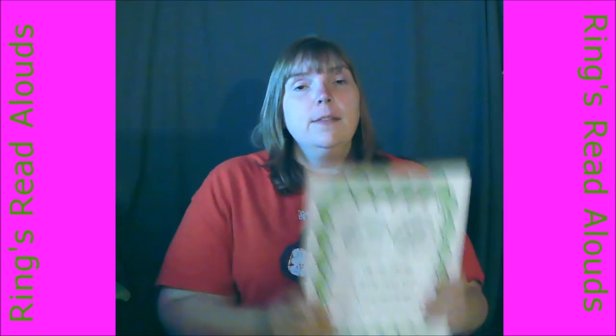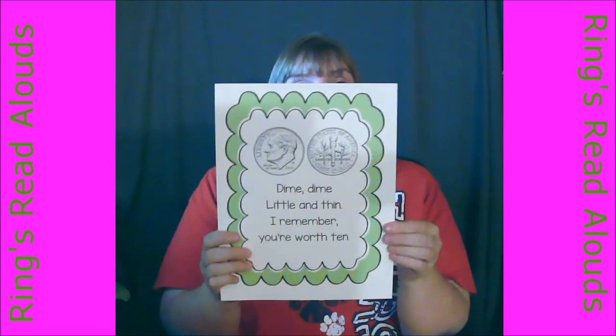Let's review all of our coins. This is a dime. Dime, dime, little and thin — I remember you're worth 10. Let's count by 10s: 10, 20, 30, 40, 50, 60, 70, 80, 90, 100. Good job.